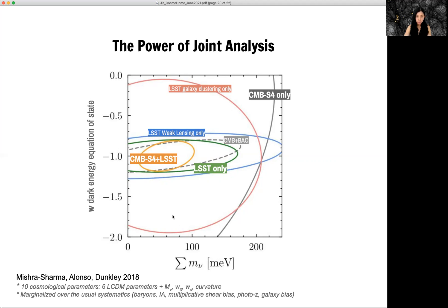If you use LSST weaklensing, you get this blue contour. And then combine LSST, you have the green contour, which is improvement on dark energy, but it's still not good enough for neutrino masses.